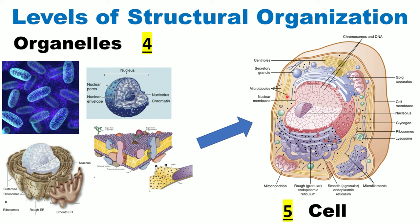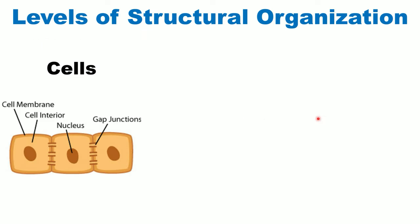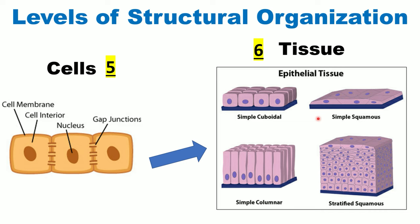Moving from level four to level five of structural organization of the human body: a cell is composed of several types of organelles, all working together to perform various cellular functions. Of course, we have many types of cells. Several cells move us from level five to level six, which is the tissue. A tissue is a bunch of cells — sometimes from just one type, sometimes from several types.